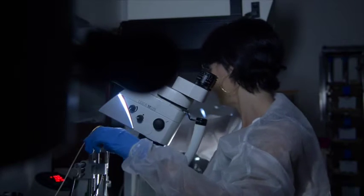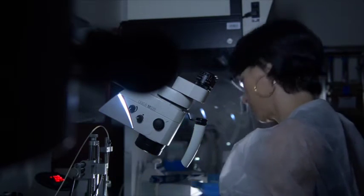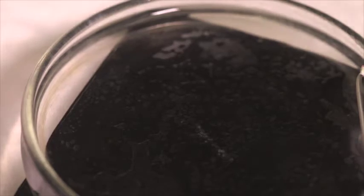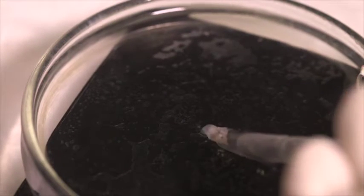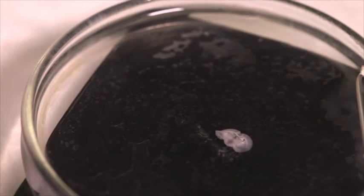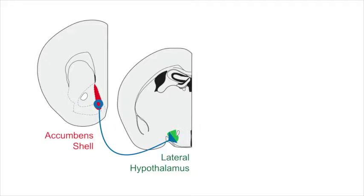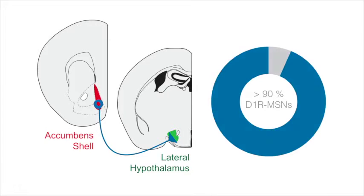First, we used neural tracing to understand which accumbens neurons project to the lateral hypothalamus. These experiments were performed in mice that were genetically engineered to express a fluorescent reporter protein in the different cell types. We found that more than 90% of accumbens cells projecting to LH also expressed the dopamine D1R, identifying them as D1R medium spiny neurons.